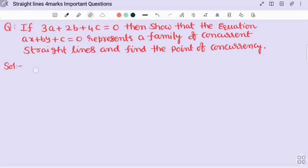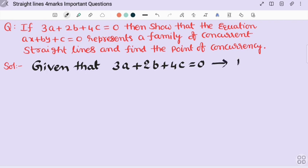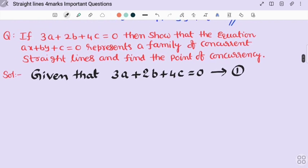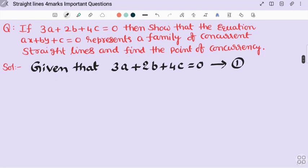Given that 3a + 2b + 4c = 0, we put that equation number 1. And ax + by + c = 0, equation number 2.